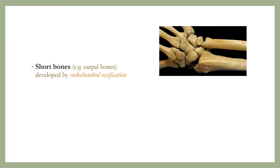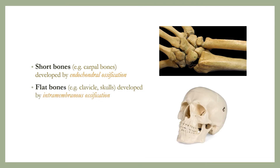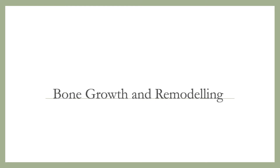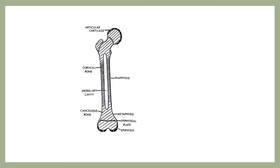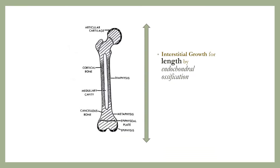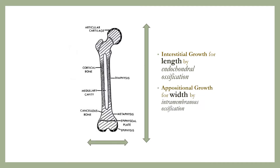Short bones, for example carpal bones, are developed by endochondral ossification. Meanwhile, flat bones, for example the clavicle and skull, are developed by intramembranous ossification. Bones grow in length by endochondral ossification, whereas they grow in width by intramembranous ossification.